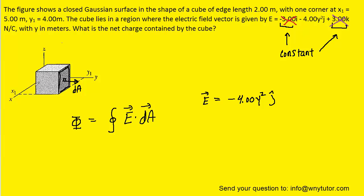These differential area vectors will always point away from the Gaussian surface. So we would have a differential area vector on this surface oriented like so. And then on the other surface, which is sort of obscured here — basically the left side of the cube — there's a differential area vector that's pointing in this direction, extending away from the Gaussian surface. In order to evaluate the flux now, we're going to find the electric flux through that right face of the cube as well as the left face of the cube. We're considering the right and the left face because the electric field is acting only in the y-direction.